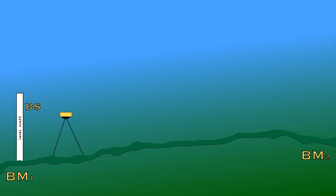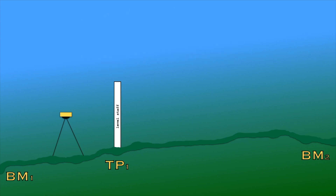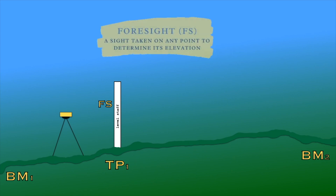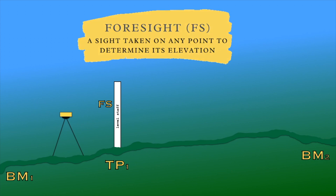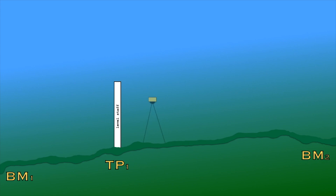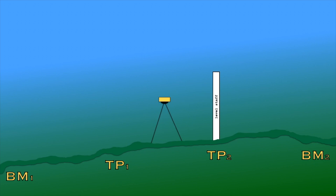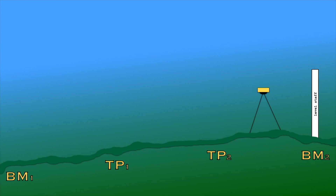Then we will place our equipment at some distance and take our measurement. After that we move to the first turning point. A turning point is a point temporarily located and marked in order to establish the elevation. At turning point one we place a staff, then we measure our first foresight. Foresight is a reading taken on any point to determine its elevation. We then move the equipment to the next point to measure the backside of turning point one, and then the backside of turning point two. Finally, the staff will be placed on the point where we want to find the elevation — our new benchmark point.